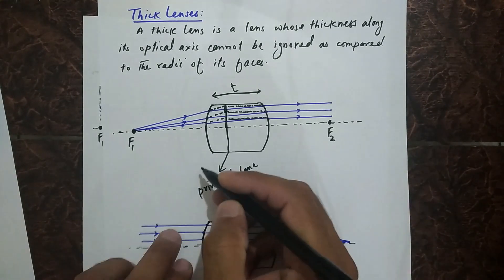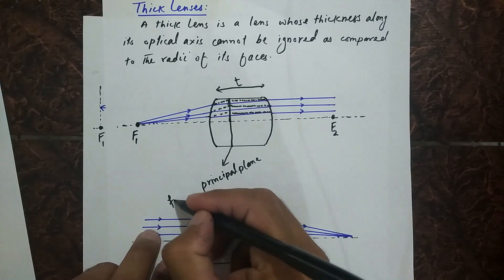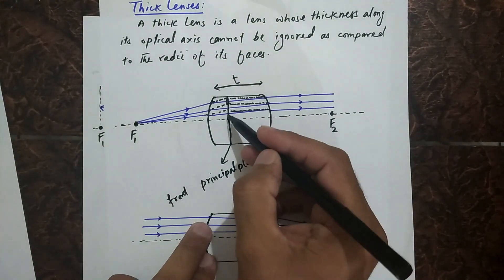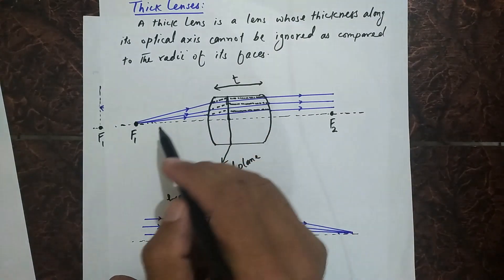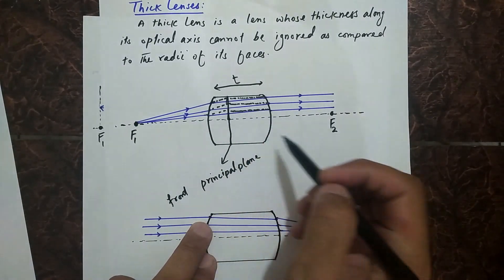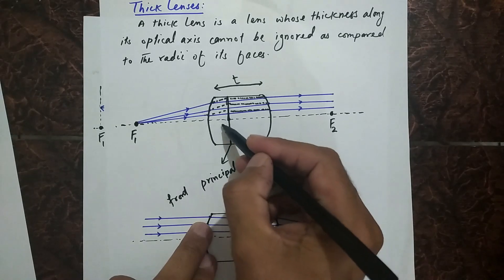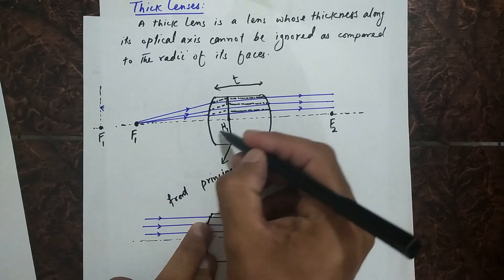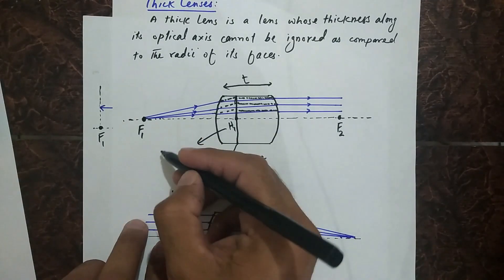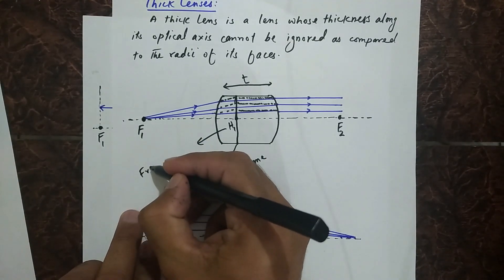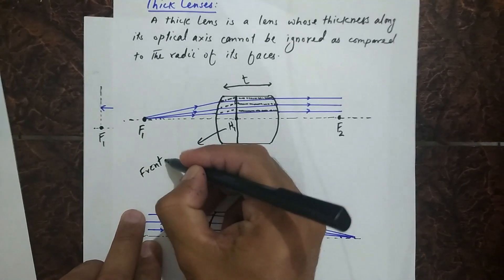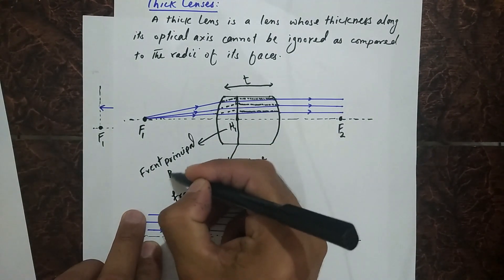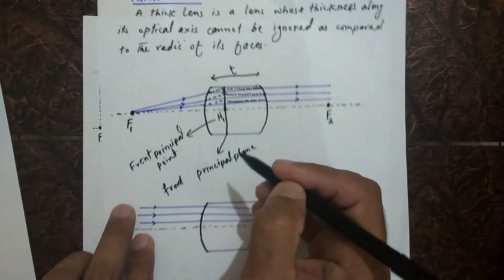This plane is called the front principal plane. The point where this principal plane intersects the optical axis is called the front principal point, denoted by H1.